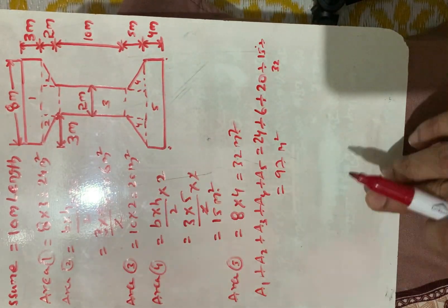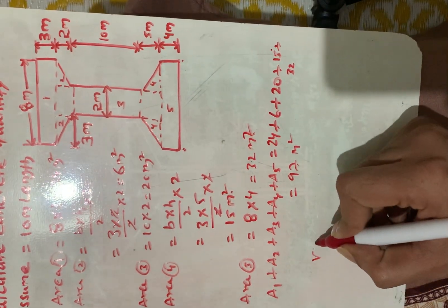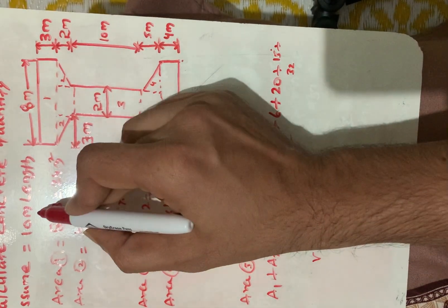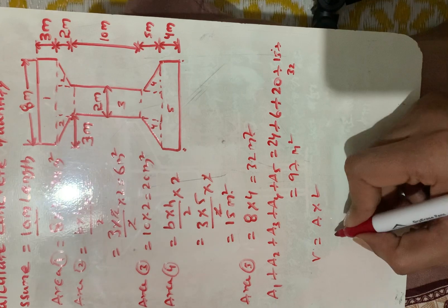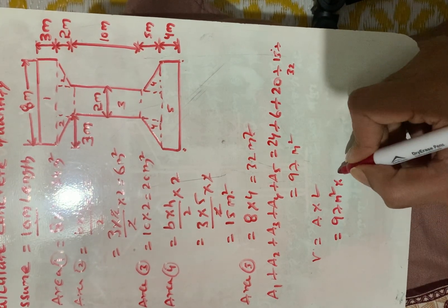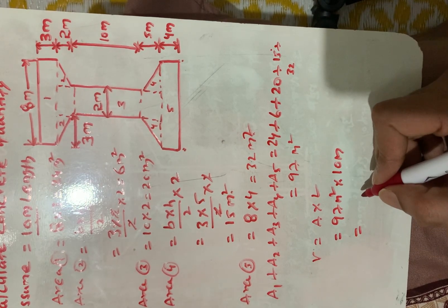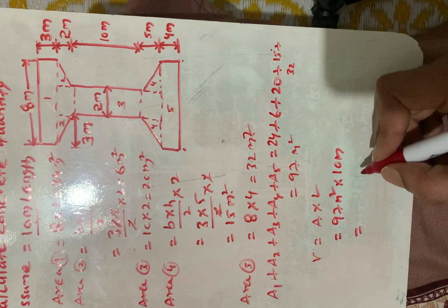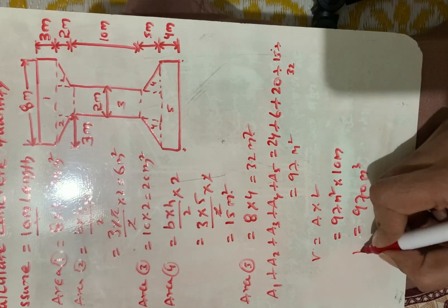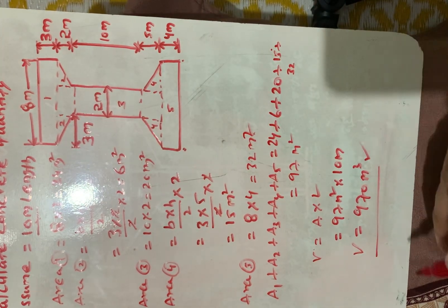To calculate the concrete quantity we need the volume. The volume formula is: Volume = Area × Length. The given length is 10 meters, so Volume = 97 m² × 10 m = 970 cubic meters.